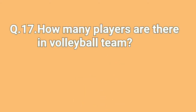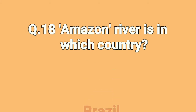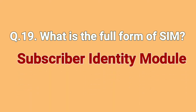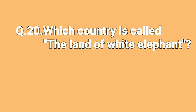How many players are there in a volleyball team? 6. Amazon River is in which country? Brazil. What is the full form of SIM? Subscriber Identity Module. Which country is called the Land of White Elephant? Thailand.